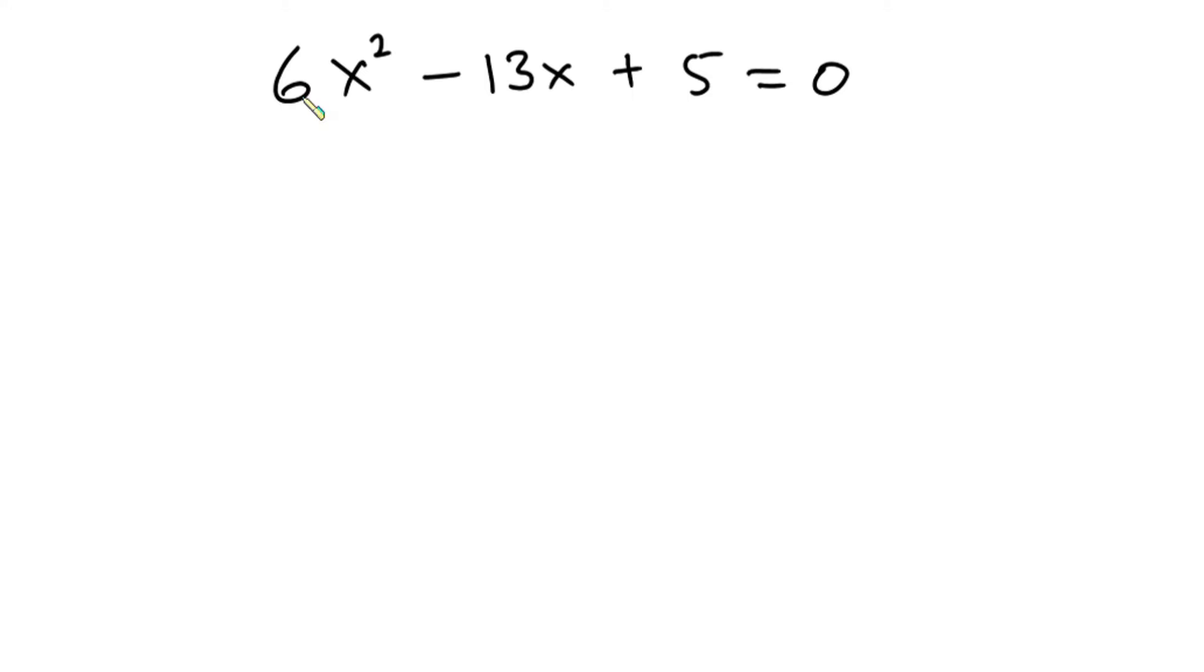So the first thing we're going to do is to slide this 6 and then multiply by this 5. So we're going to have x to the second power minus 13x plus 30 and this is equal to 0.